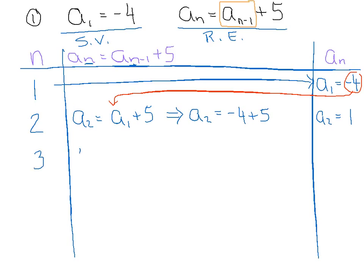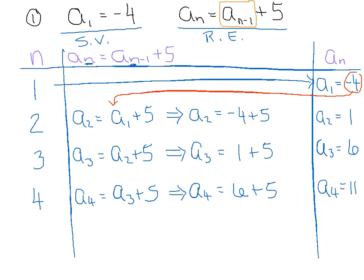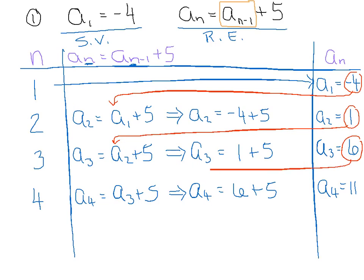We'll do that process one more time. Typically they ask for the first four terms of the sequence. Substitute n equals 4: a sub 4 equals a sub 3 plus 5, which implies a sub 4 is really 6 plus 5. Therefore a sub 4 is equal to 11. To reiterate: once we found a sub 2, we substituted that value in; once we found a sub 3 was equal to 6, we substituted that in. That's the magical step that makes these recursion equations work.